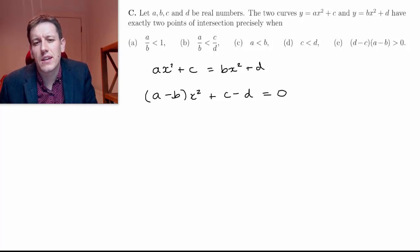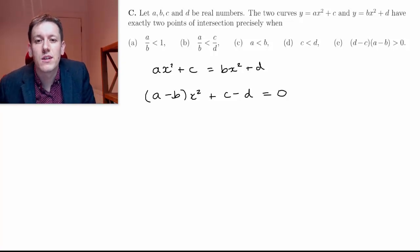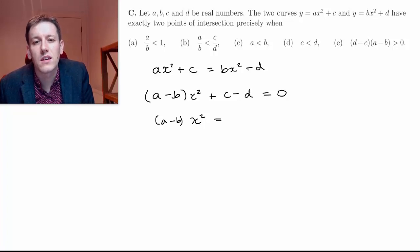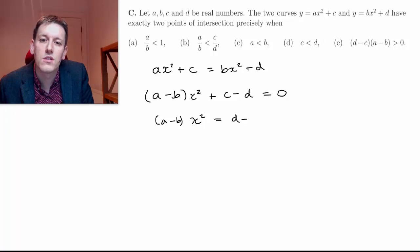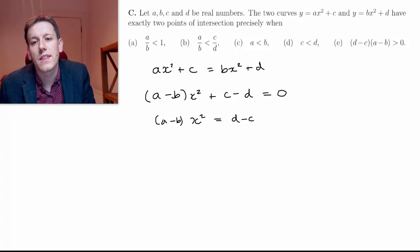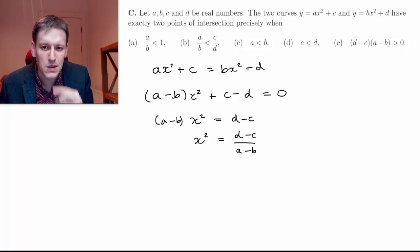This is actually an easy quadratic so I wouldn't use the usual quadratic methods here. I move c minus d to the right hand side: a minus b times x squared equals d minus c, then divide by a minus b, giving x squared equals d minus c divided by a minus b.